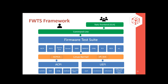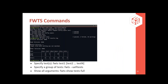FWTS calls Linux kernel APIs to communicate with firmware and hardware. It calls the ACPI CA (the Linux ACPI subsystem) and the EFI test driver, which translates system calls directly to UEFI runtime services. For the interface, most technical users will prefer the command line, but FWTS also provides a simple graphical user interface called the FWTS frontend for less technical users. The FWTS command line syntax is straightforward: execute a test or multiple tests by specifying test names after fwts, and you can also execute a group of tests like ACPI or UEFI.